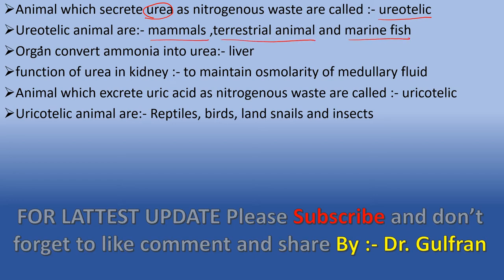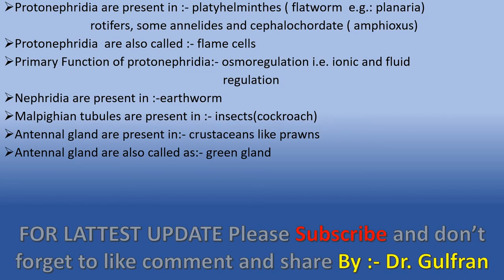Animals which excrete urea as a nitrogenous waste are ureotelic, and the ureotelic animals are mammals, terrestrial animals, and marine fish. The organ which converts ammonia into urea is the liver. The function of urea in the kidney is to maintain osmolarity of medullary fluid. Animals which excrete uric acid as a nitrogenous waste are called uricotelic, and these are reptiles, birds, land snails, and insects.